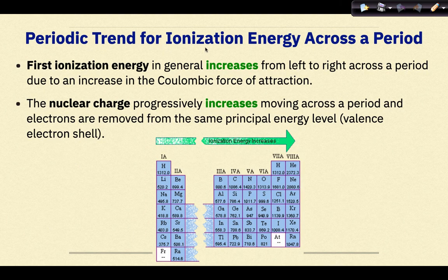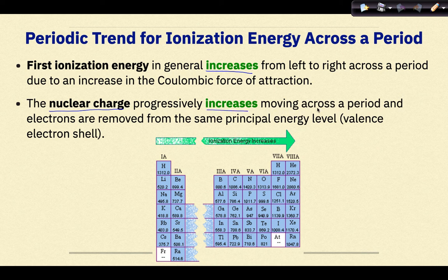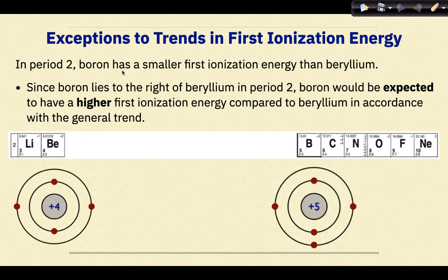Periodic trend for ionization energy across a period: first ionization energy in general increases from left to right across a period due to an increase in the Coulombic force of attraction. The nuclear charge progressively increases moving across a period, and electrons are removed from the same principal energy level — in other words, the valence shell. Exceptions to trends in first ionization energy.